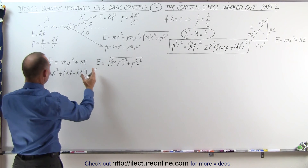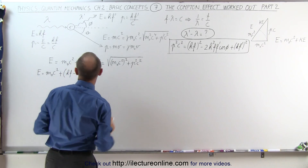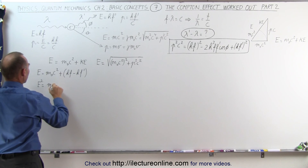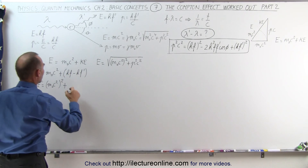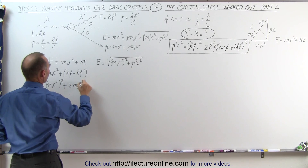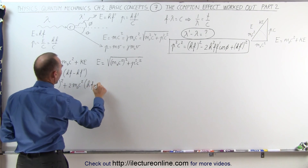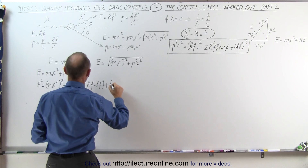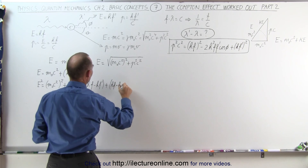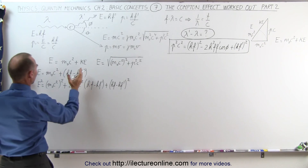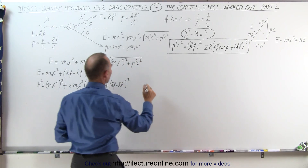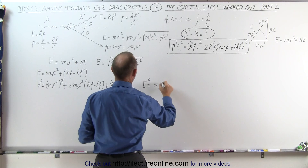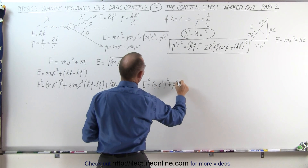Now if we square both sides — if we square this equation and we square that equation — what do we get? Energy squared is equal to M sub-naught C squared quantity squared, plus twice the product of these two: two times M sub-naught C squared times HF minus HF prime, plus HF minus HF prime quantity squared. That's the left equation squared. Now we're going to square the right equation, which means that E squared is equal to M sub-naught C squared quantity squared plus P squared C squared.